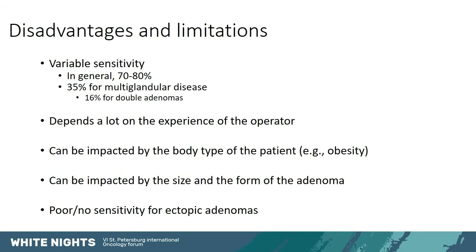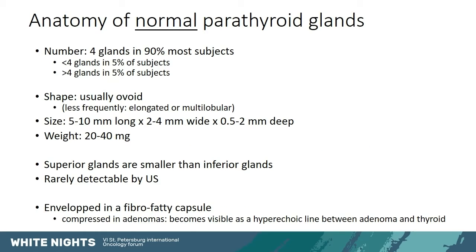There are also disadvantages and limitations to parathyroid ultrasound. Notably, the variable sensitivity — in general 70 to 80%, but much less for multiglandular disease — because it depends a lot on the experience of the operator. It can be impacted by the body type of the patient, as parathyroid glands are often found deeply in the neck. In obese patients with a thick neck they are more difficult to localize. It can also be impacted by the size and form of the adenoma, and if the adenoma is not accessible it will not be visualized.